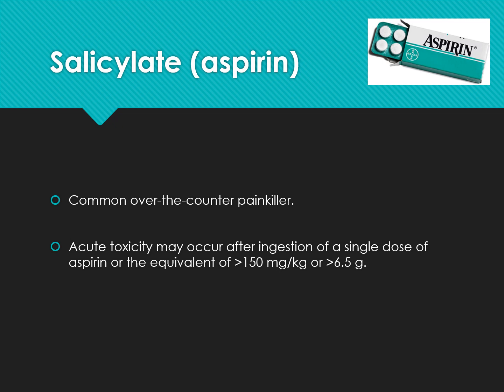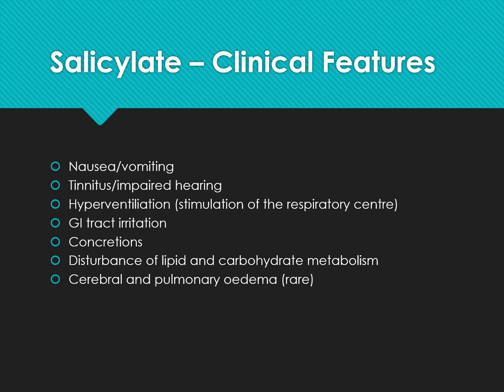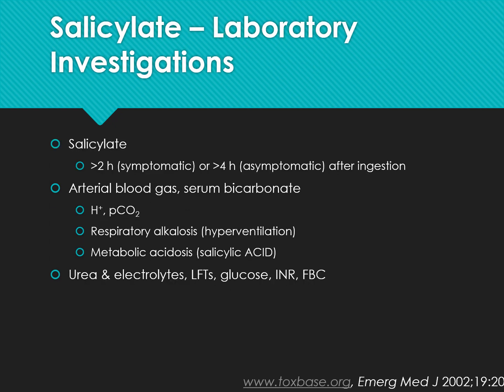Salicylate/aspirin is a common over-the-counter painkiller. Acute toxicity can occur after ingestion of greater than 150 mg/kg or greater than 6.5 grams. Symptoms include nausea, vomiting, tinnitus, impaired hearing, hyperventilation due to stimulation of the respiratory centre, GI tract irritation, concretions, disturbance of lipid and carbohydrate metabolism, and rarely cerebral or pulmonary oedema. Laboratory investigations include salicylate levels measured greater than 2 hours if symptomatic or greater than 4 hours if asymptomatic. Tests include arterial blood gas, serum bicarbonate, respiratory alkalosis, metabolic acidosis, urea and electrolytes, liver function tests, glucose, iron, and full blood count.